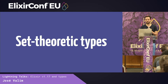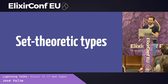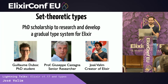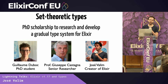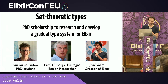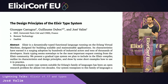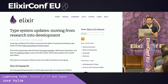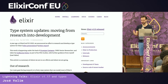Something else we've been exploring for quite some time is the type system, and with Elixir 1.17, it's finally getting its way into Elixir. I announced, I believe, three years ago at ElixirConf Europe that we have a PhD scholarship to research and develop a gradual type system for Elixir. Guillaume, Bep, and I have been working on it and published a paper that goes at length into our work. Last year we announced that the type system effort is moving from research into development.